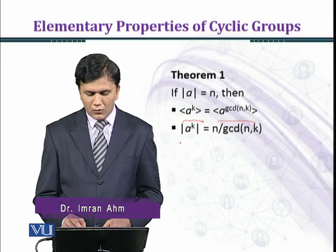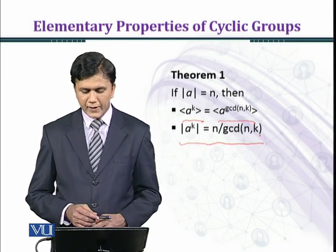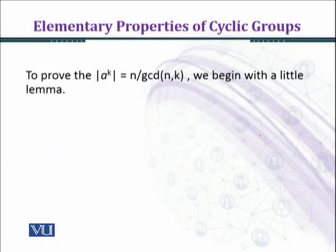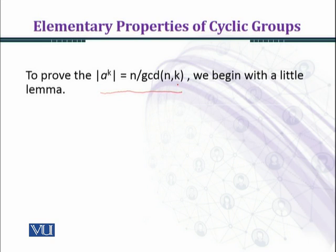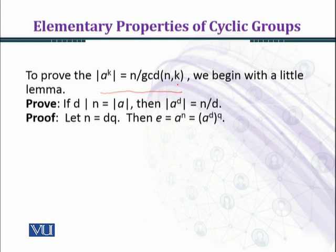The second part states: the order of a^k equals n over GCD of n and k. One can easily prove part 1. Now we prove part 2. To prove that the order of a^k equals n over GCD(n, k), we first prove a little lemma: if d divides n, which is the order of a, then the order of a^d would be n over d.